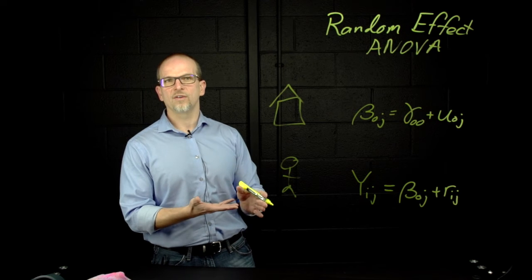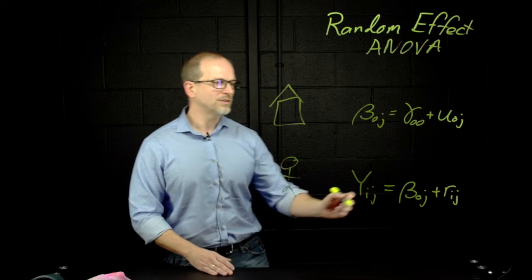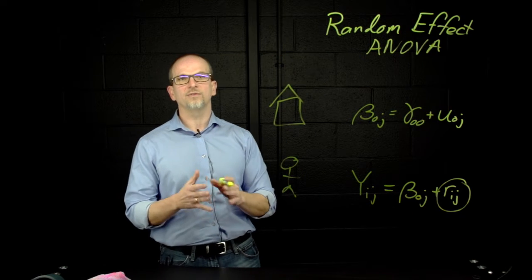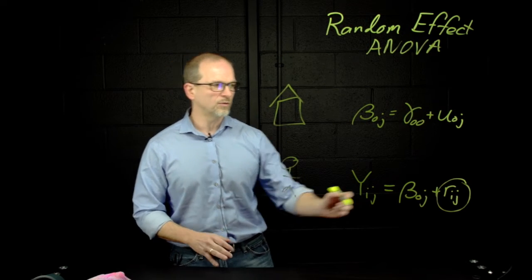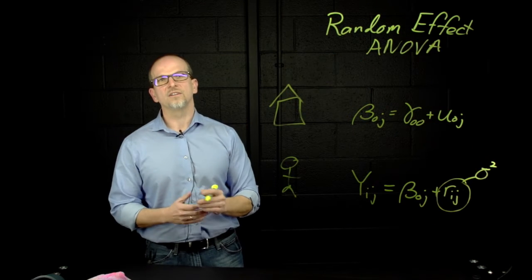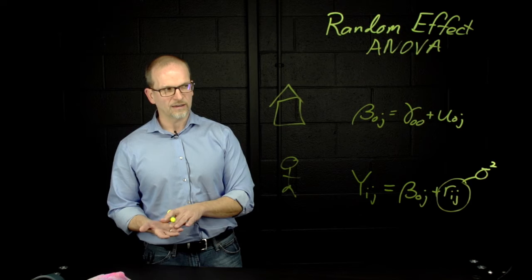And so notice what our random effects ANOVA does is it provides two sources of variability. We have r sub ij, which describes the variability of students within school. And so we'll use a sigma squared to describe the extent to which students vary within a given school.